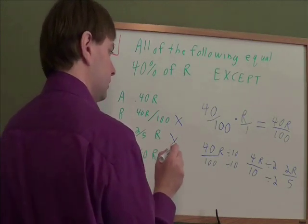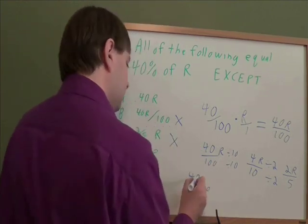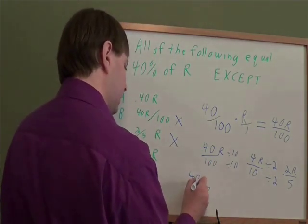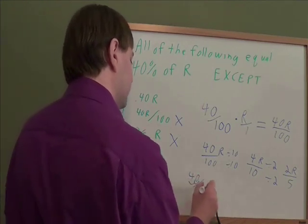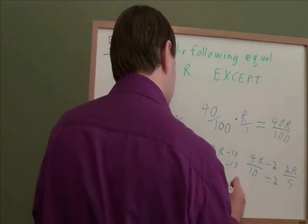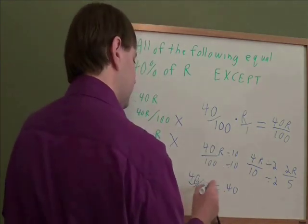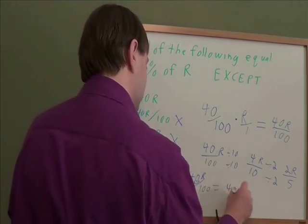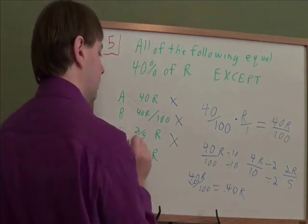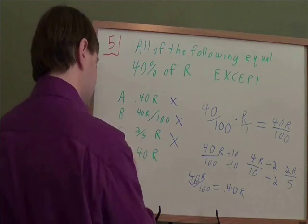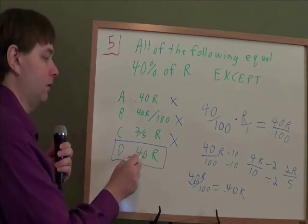And then what about changing it to a decimal? Any time that you're dividing by 100, you can just take your top part and move the decimal twice to the left, once for each 0 down there. 40 divided by 100 is just 0.4 or 0.40. So 40 divided by 100 is 0.40. And if you have the R there, you still have the R there. So this 0.40R is another way to say 40% of R. Which means our answer has to be this one here, 40R. That just means 40 of R, not 40% of R.